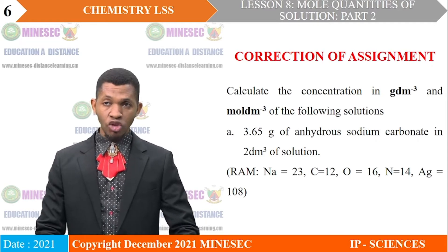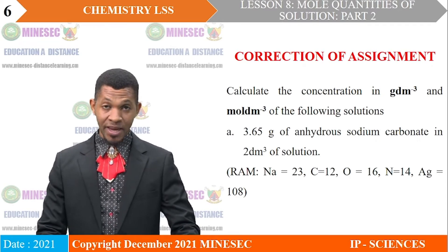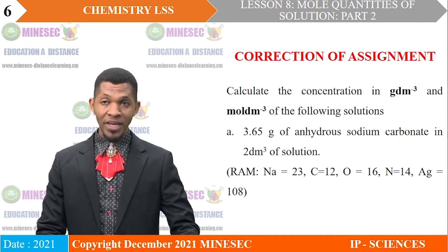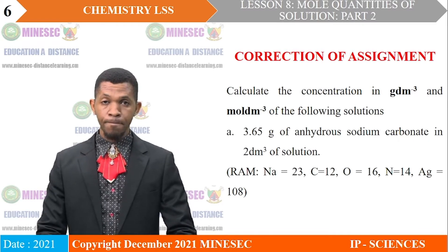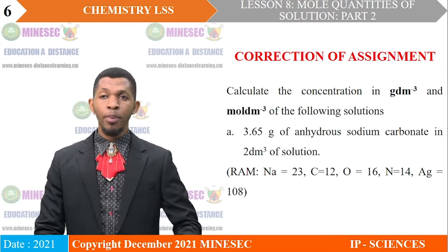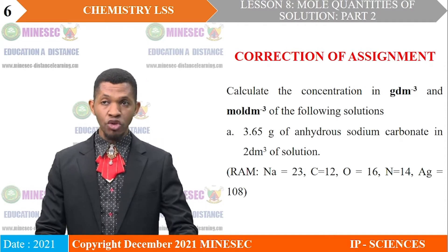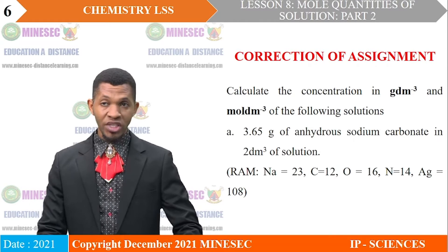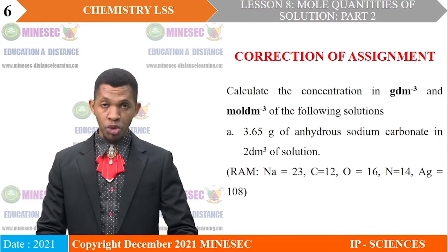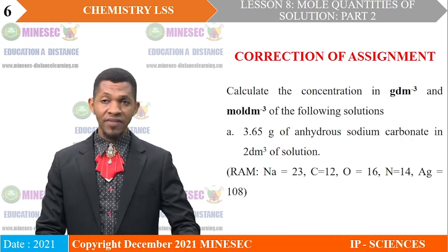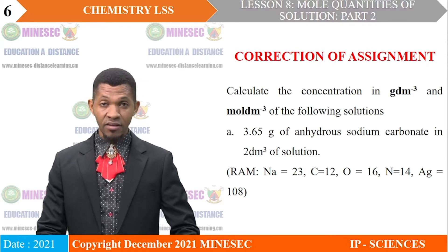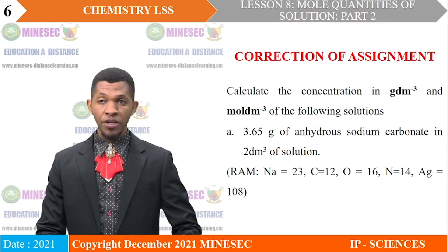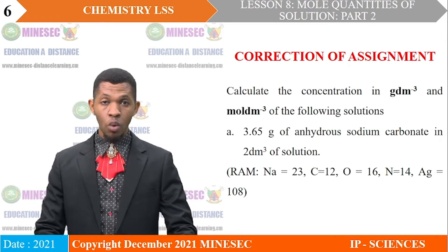Calculate the concentration in grams per cubic decimeter and moles per cubic decimeter of the following solutions. A: 3.65 grams of anhydrous sodium carbonate in 2 dm³ of solution. Given that the relative atomic mass of sodium is 23, carbon 12, oxygen 16, nitrogen 14, and silver 108.